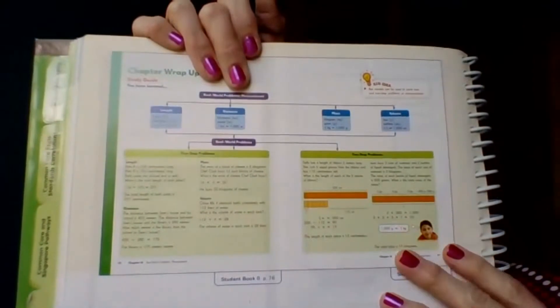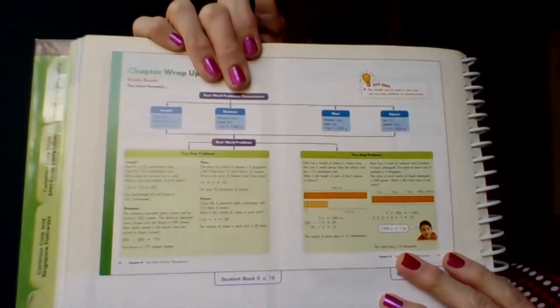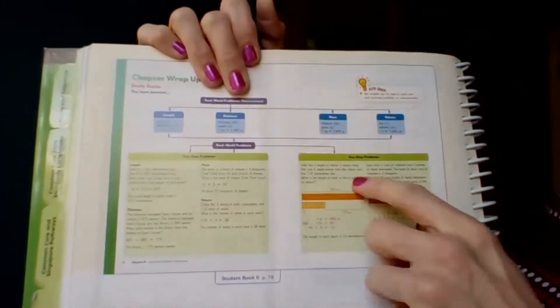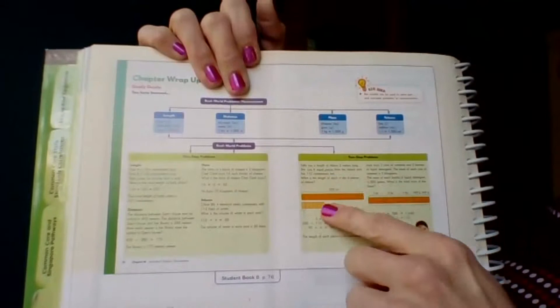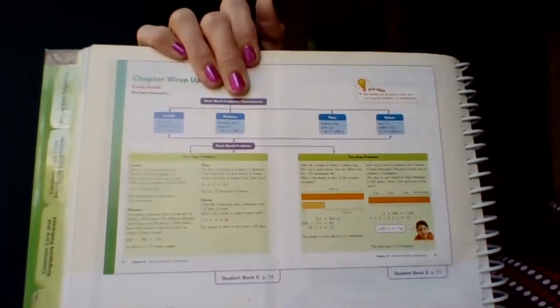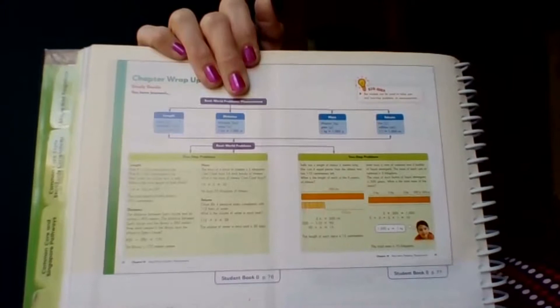So now let's move over here to reviewing two-step problems. These are a little bit more complicated. On the test, it would be really smart if you use the bar models to help you because they are there to support you in your thinking. Let's look at these examples.